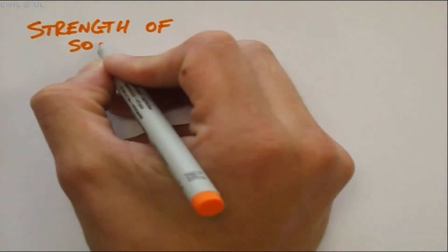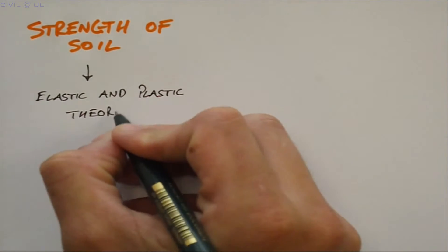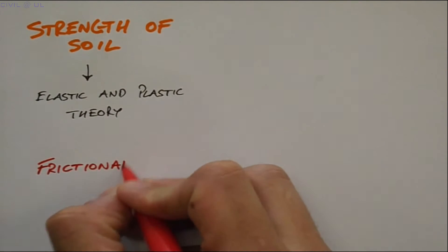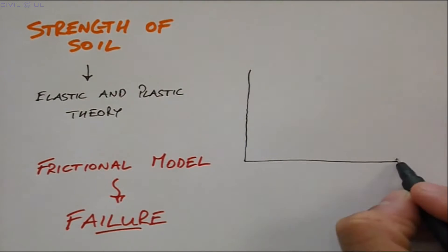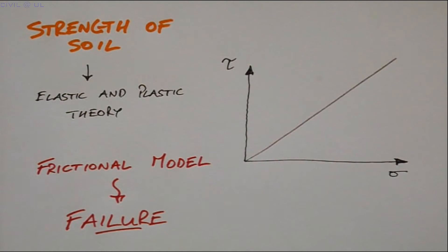There's a lot written on the strength of soil based fundamentally on the union of elastic and plastic theories. In this video we'll concentrate on developing a simple frictional model to describe soil behaviour at failure. We will establish a linear relationship between the normal stress and shear stress that defines failure in soils.